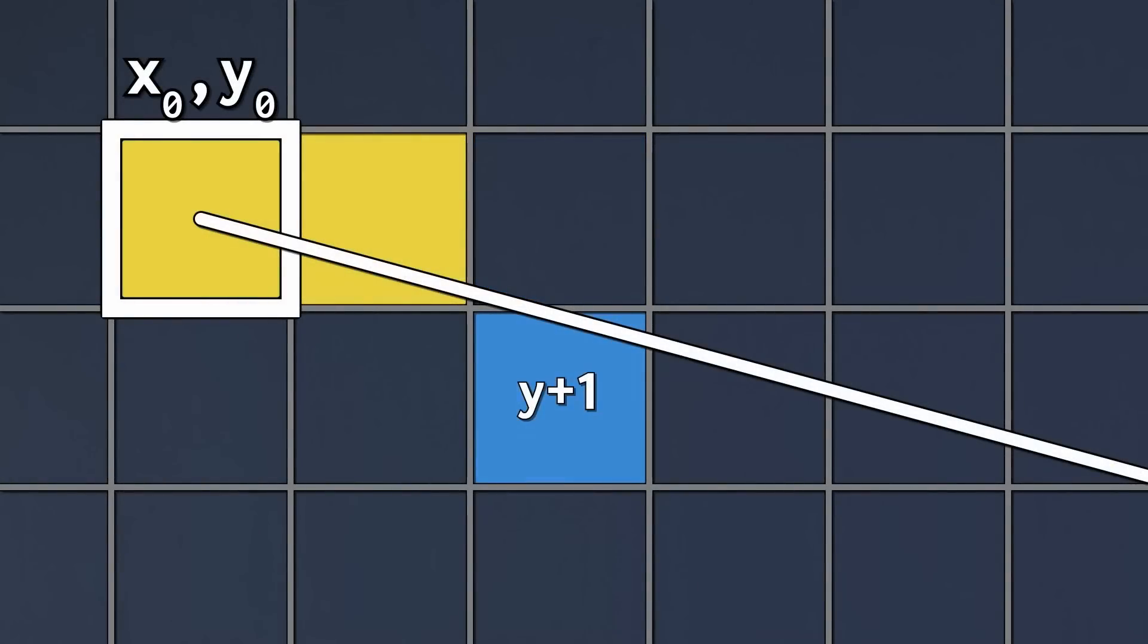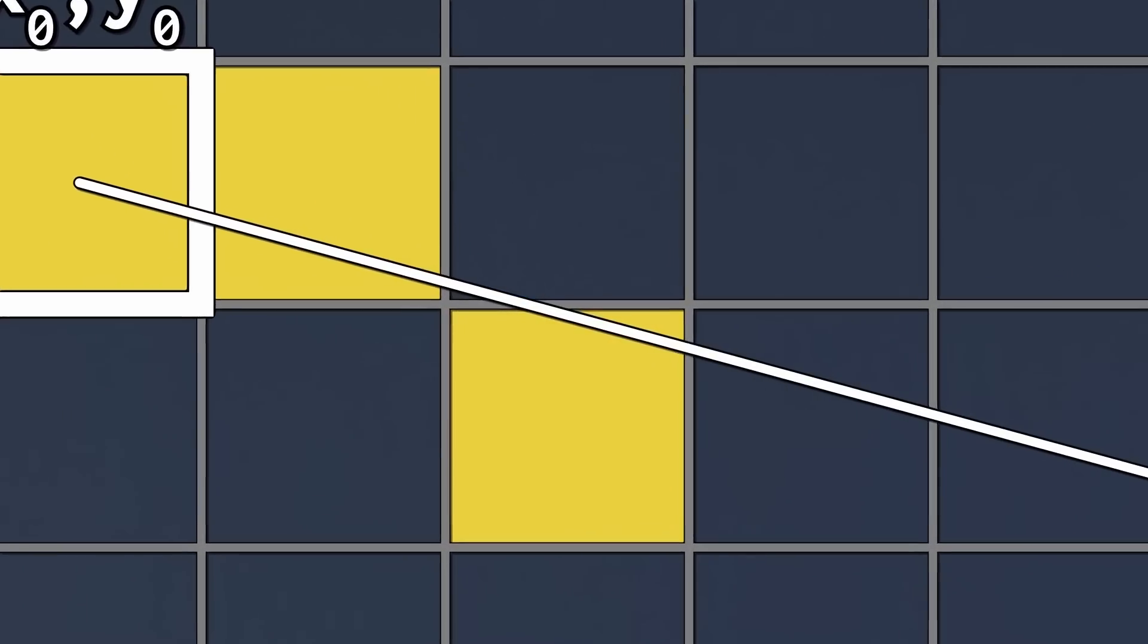I recently made a video about Bresenham's line algorithm. However, when we draw line segments using that algorithm, we get perfectly sharp edges.